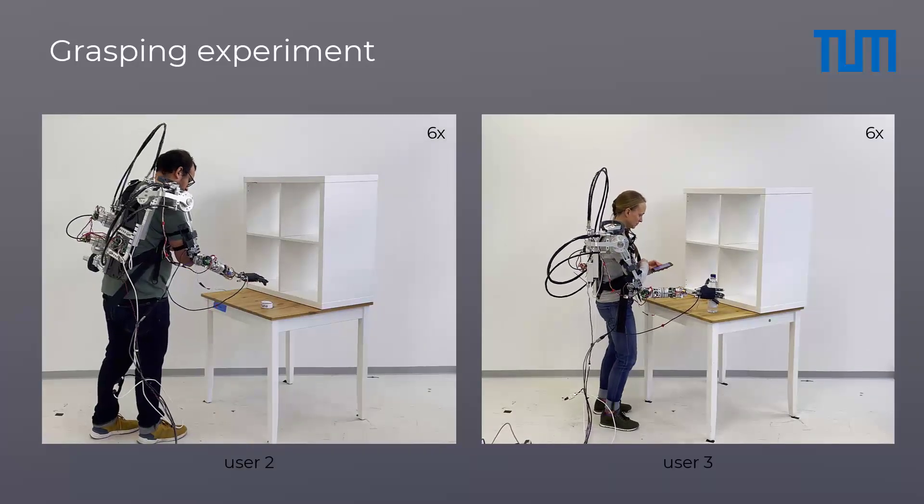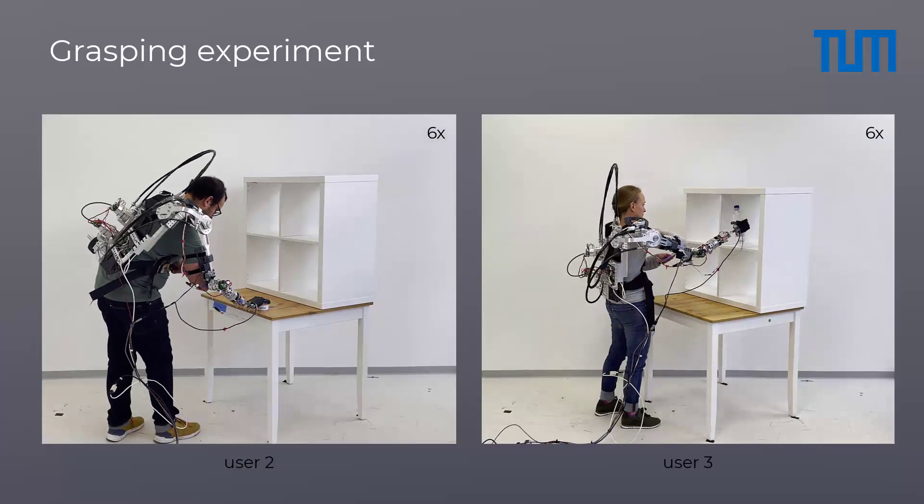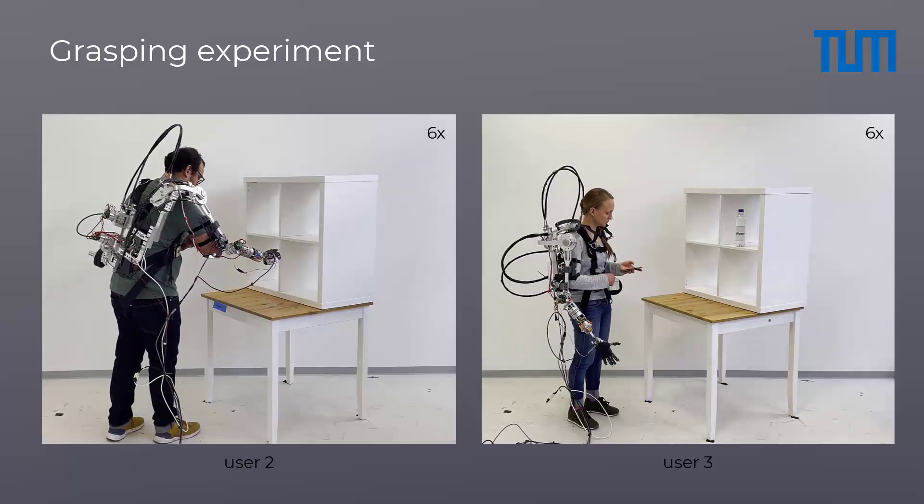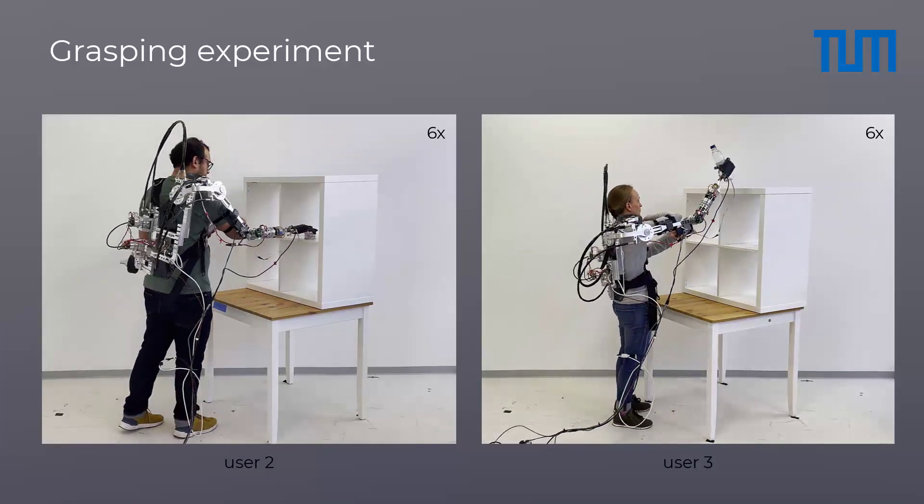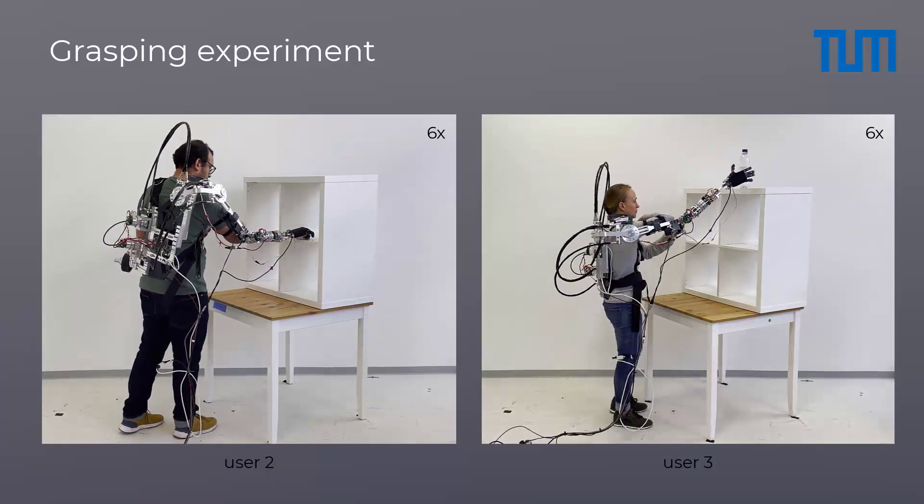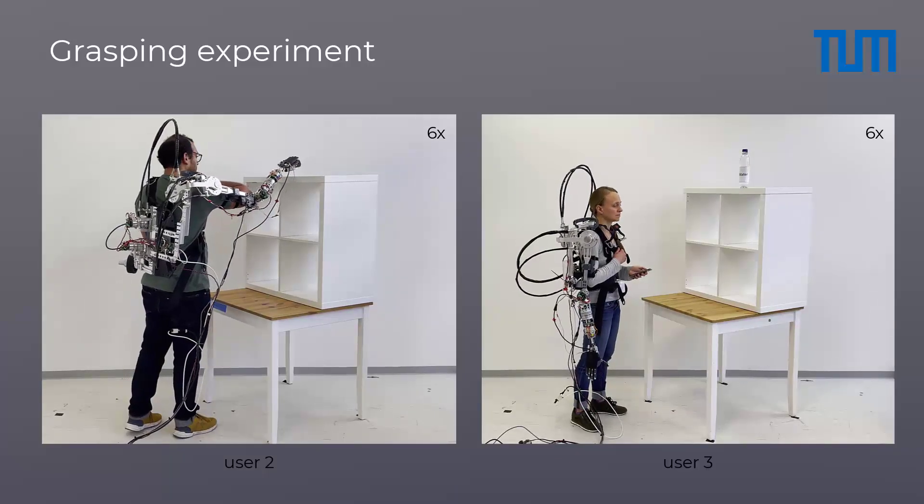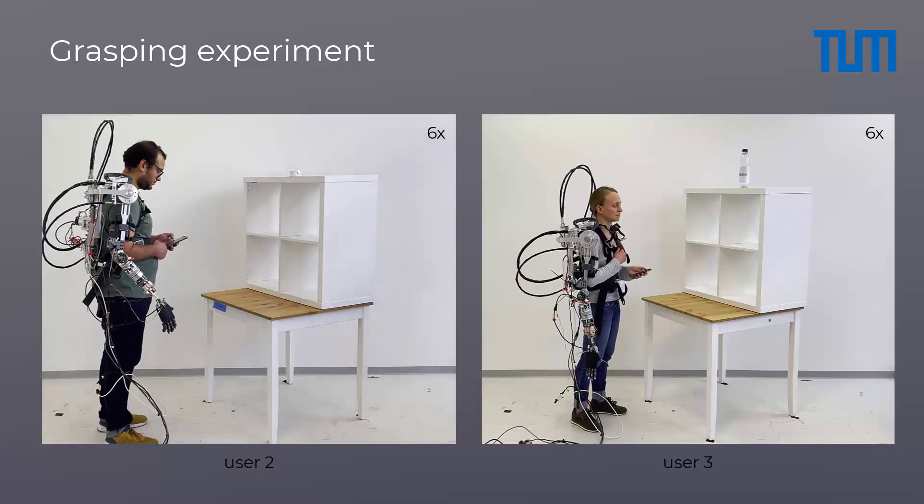Here we see that user 2 and 3 are able to repeat the grasping experiments with only 5 minutes of training with a smartphone. The user experiments show that the device may be adapted to very different body types. They also show that the human machine interface can be easily learned and effectively used for grasping objects.